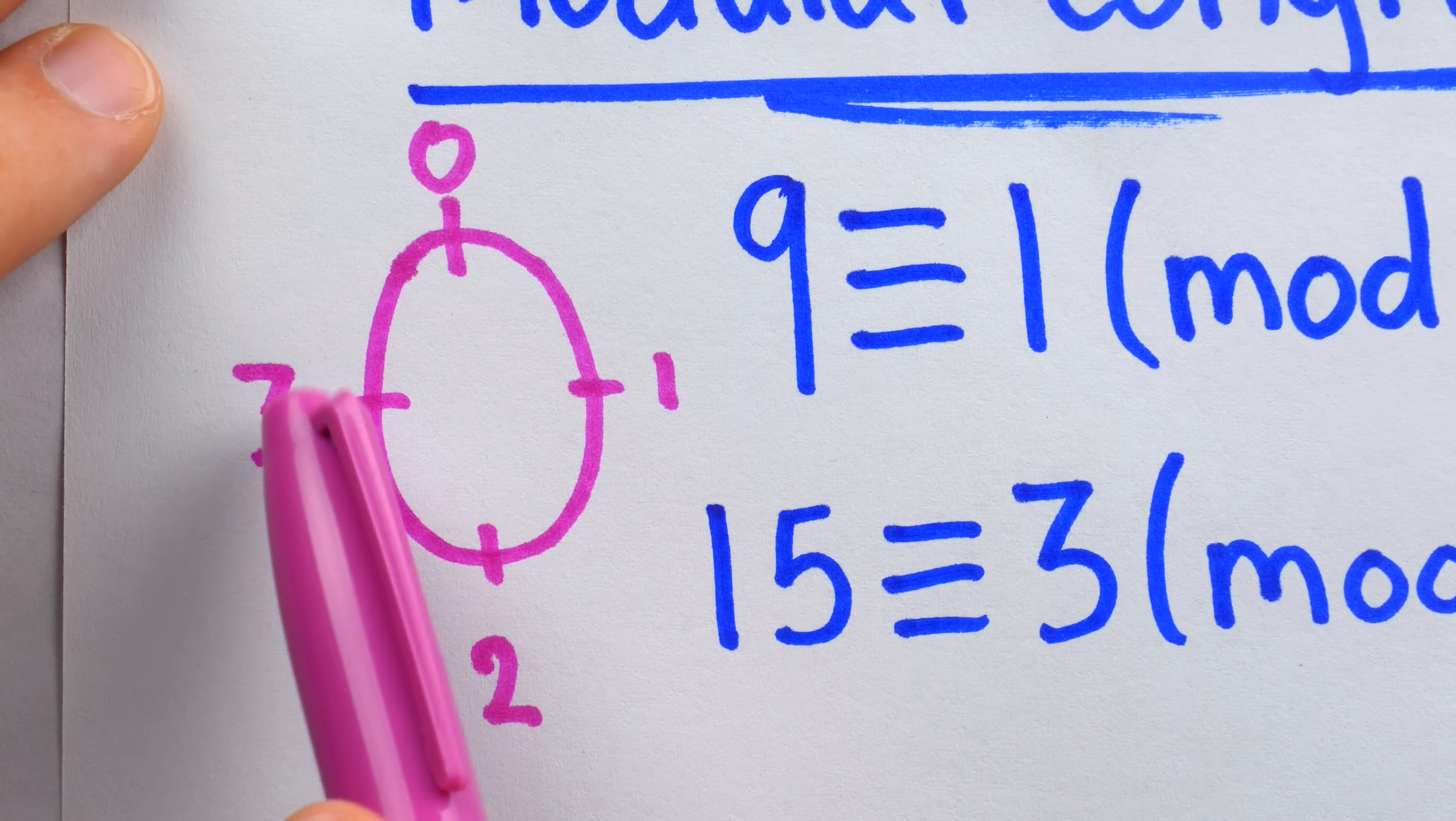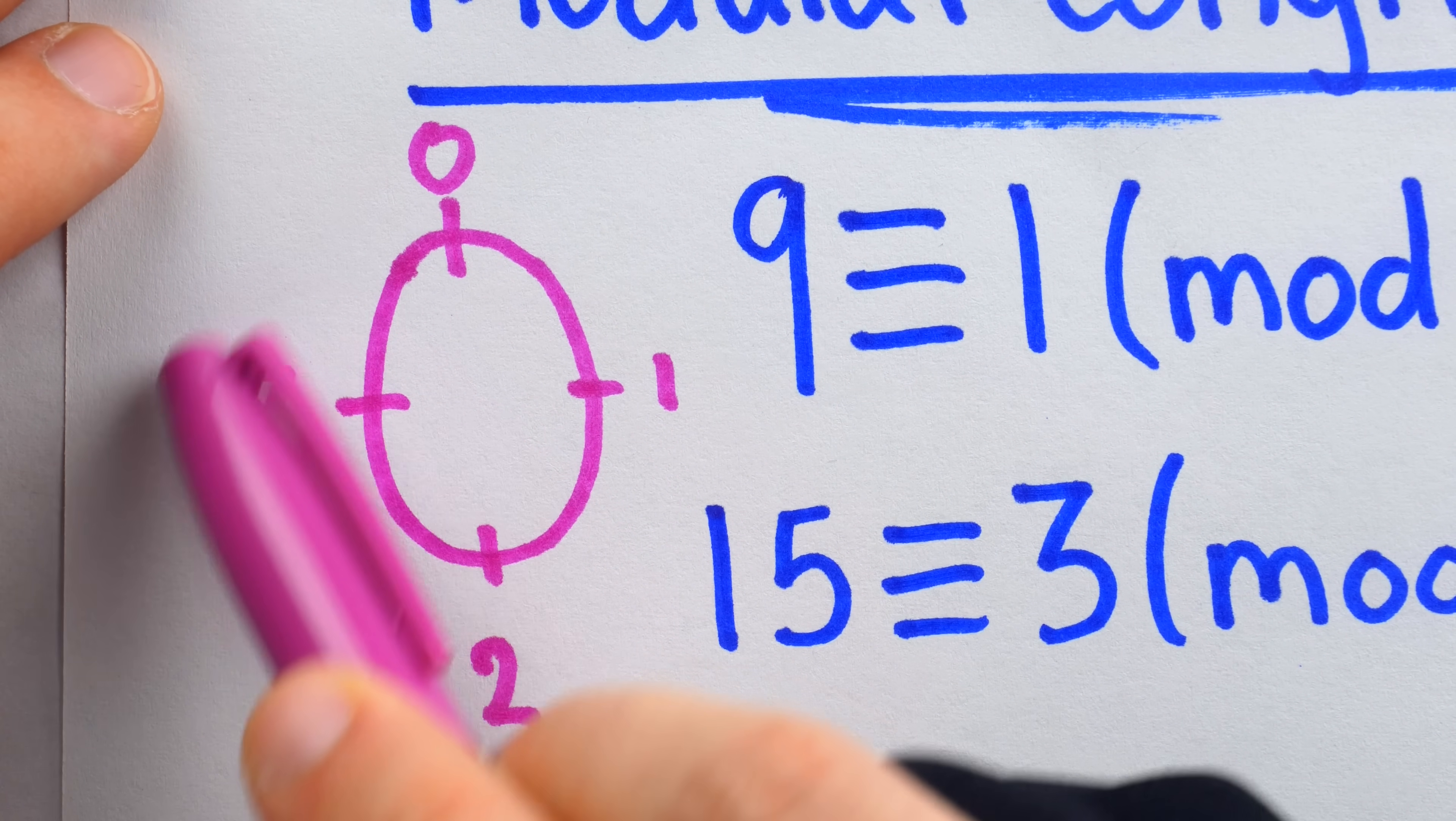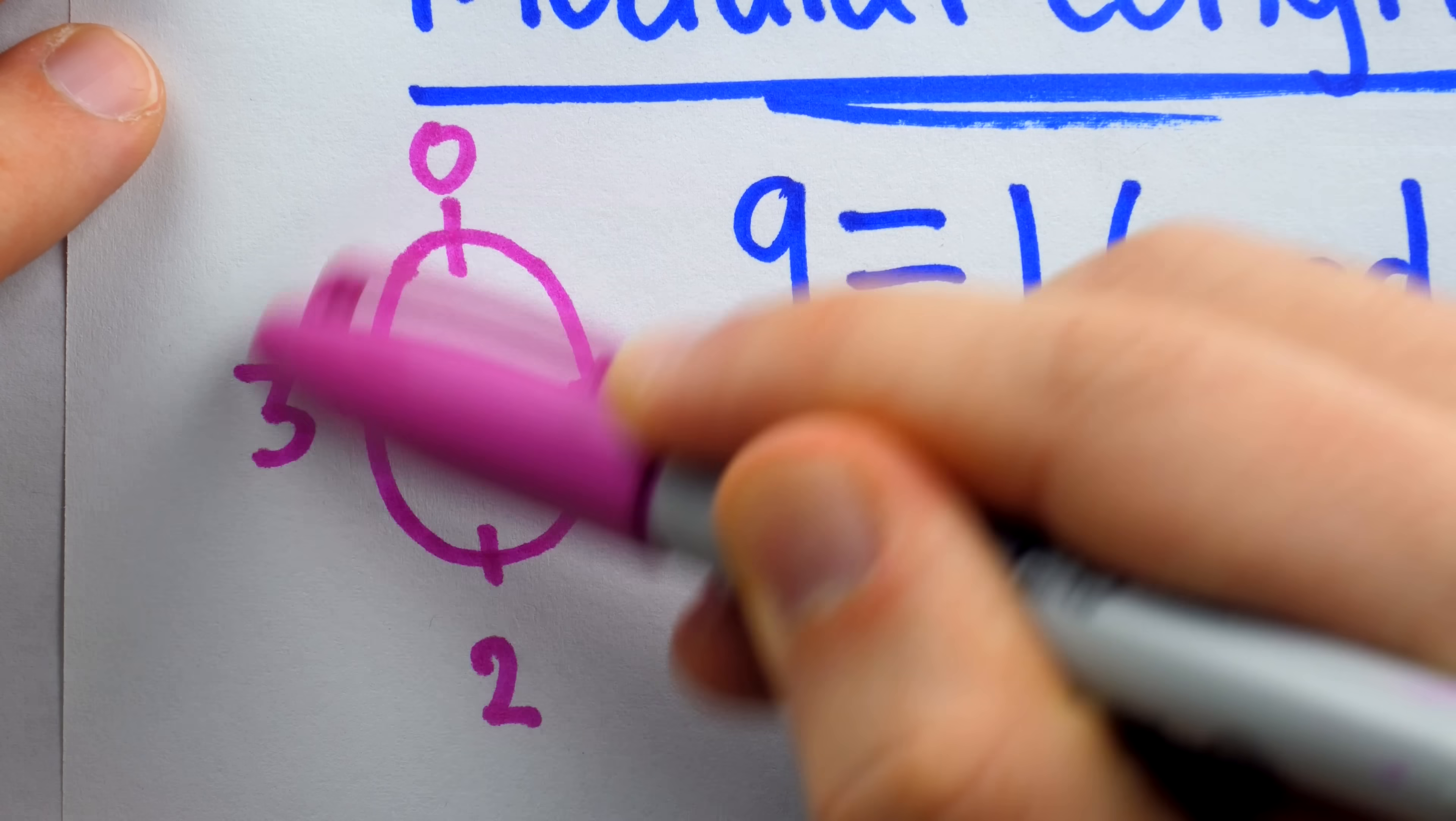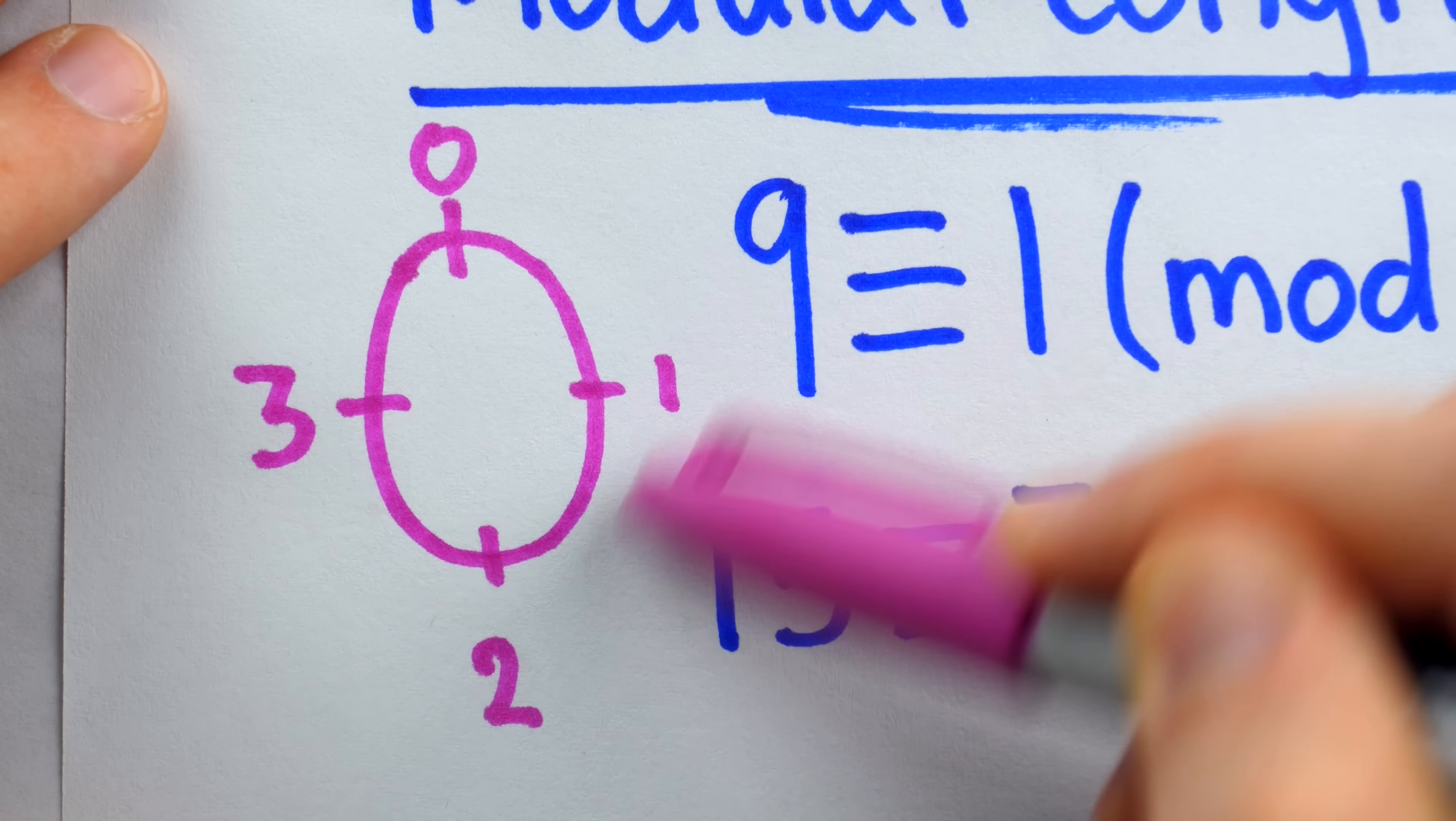You can also count along the number circle, just like you could count along a number line, to see that 15 is congruent to 3 mod 4. Check it out. 1, 2, 3, 4, 5, 6, 7, 8, 9, 10, 11, 12, 13, 14, 15. There we are, right on 3. By arriving at 0 every time we loop around 4 units, that's just saying every time 4 goes into our number, we just ignore that and keep on going.